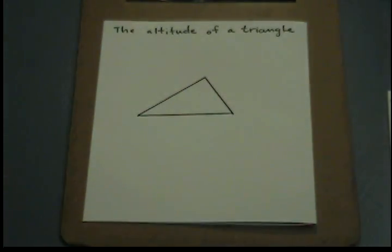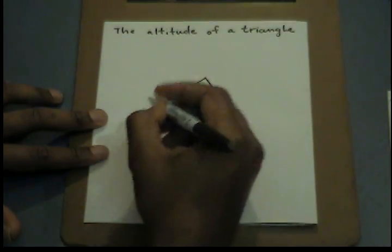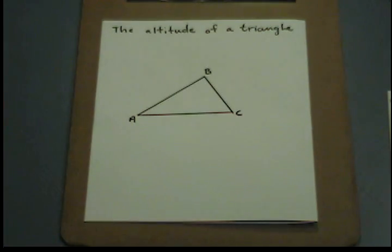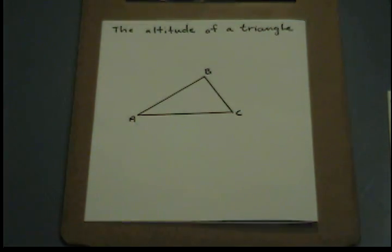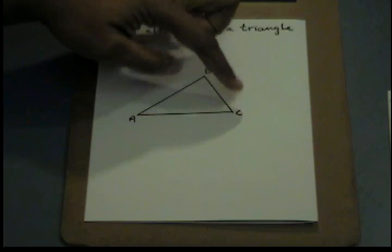Now that we have a triangle, I'm going to label the triangle ABC. Next, I want to construct an altitude from B to AC. So this will be the line, and point B will be my point not on the line.